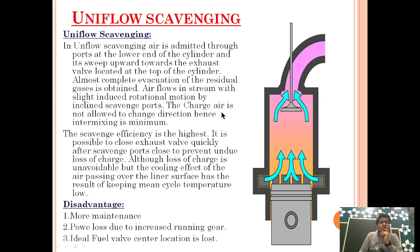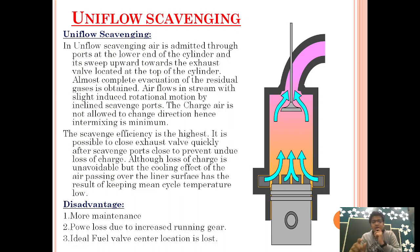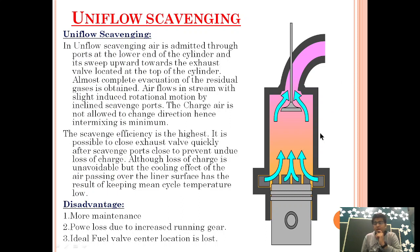The incoming air is not allowed to change direction, hence inter-mixing is minimum. As you can see, the direction of air flow is from down to up. Since there is no change in direction as was happening in loop and cross scavenging, the chances of intermixing are removed. So in summary, the advantages of Uniflow scavenging are: first, chances of intermixing are minimum as incoming air moves in one direction; second, complete evacuation of exhaust gas; third, incoming air is rotated slightly by the scavenger port, increasing combustion efficiency through better mixing with fuel.